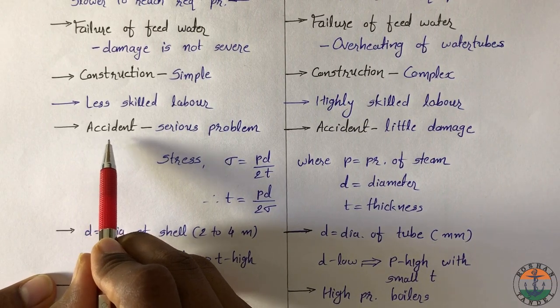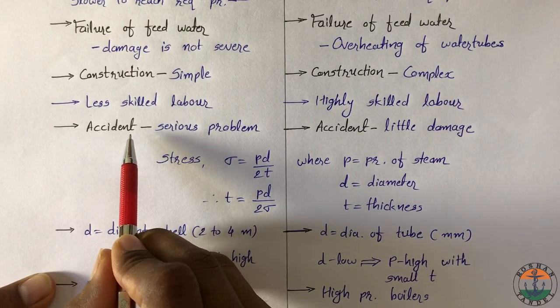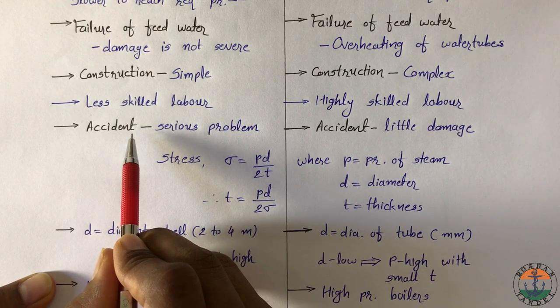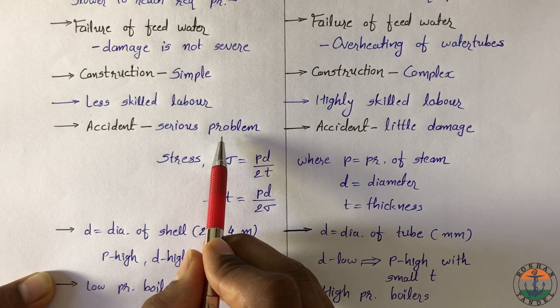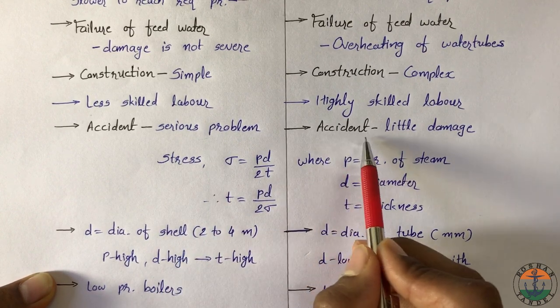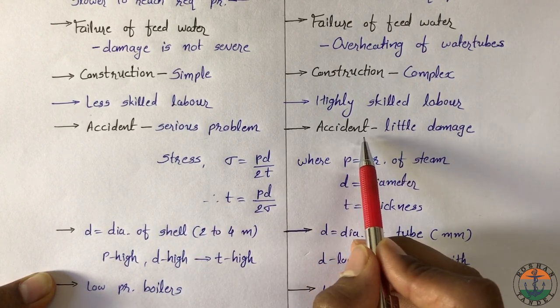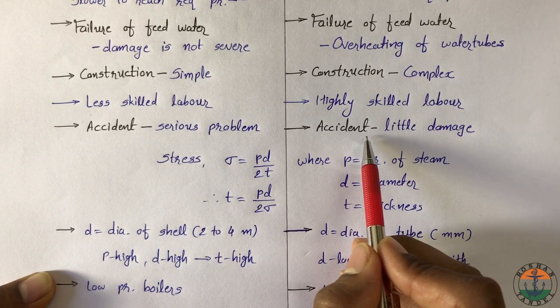In fire tube boiler, whole boiler shell is under pressure. And when the explosion occurs, it becomes very serious problem because of its large water capacity. In water tube boiler, no such explosion occurs even if one of the water tubes fails.